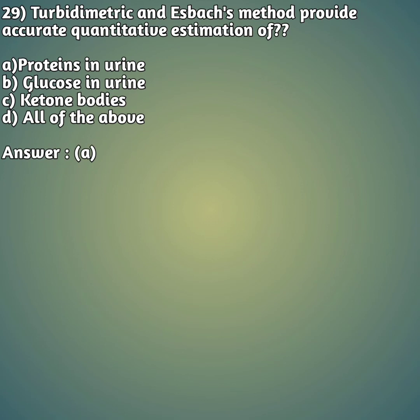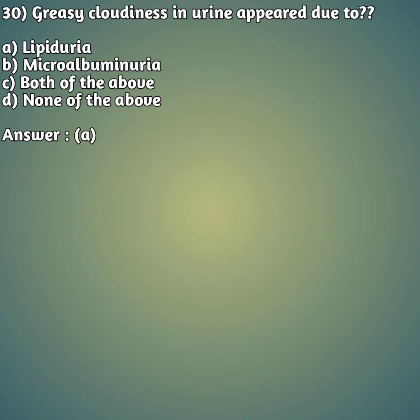Question 29: Turbidimetric and Esbach's method provide accurate quantitative estimation of — option A: proteins in urine, option B: glucose in urine, option C: ketone bodies, option D: all of the above. The right answer is option A, proteins in urine.